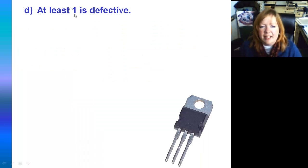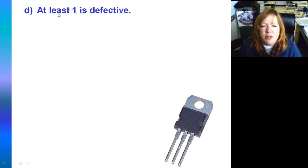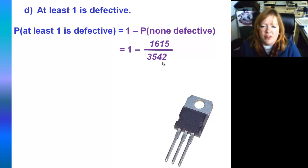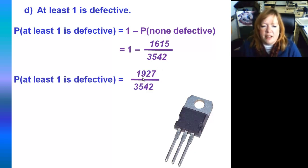For at least one being defective: in class, people mess up with this 'at least one.' Remember, when you see 'at least one,' that's one minus the probability of none. We already found the probability that none were defective. So it's one minus 1,615 out of 3,542, which gives us 1,927 out of 3,542. Just remember: at least one equals one minus the probability of none.